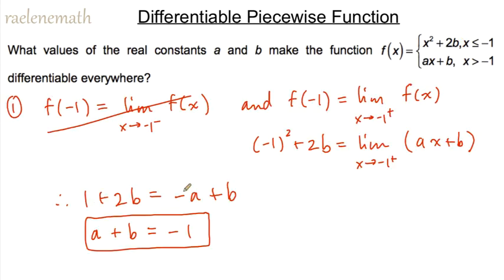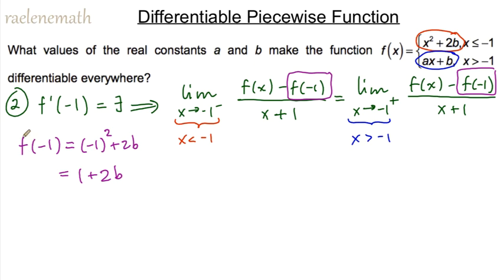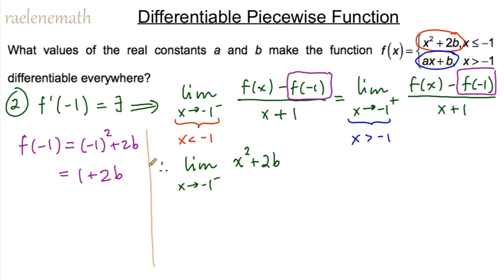We can see that f of negative one wasn't simplified further because it depends on b, so the best we can say is f of negative one equals one plus 2b. Working down in a column for the left-hand derivative: the limit as x approaches negative one from the left of [x squared plus 2b minus (one plus 2b)] all over (x plus one). The 2b terms cancel immediately, leaving (x squared minus one) over (x plus one).